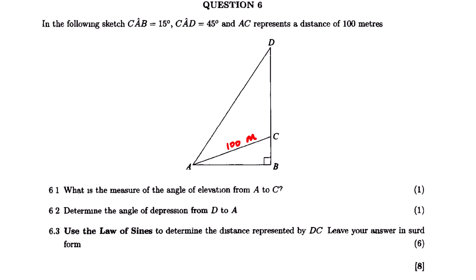CAB, this triangle, this angle is 15 degrees. And then we also have another angle which is CAD, this one. So CAD we have 45 degrees.